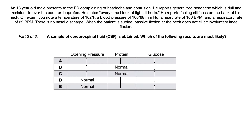Part 3: A sample of cerebrospinal fluid is obtained. Which of the following results are most likely? The answer choices involve up and down arrows for various CSF parameters — pause the video if you want time to think about it before I give you the answer.